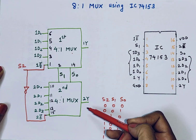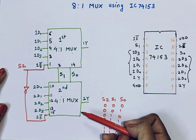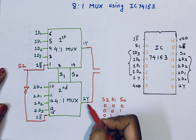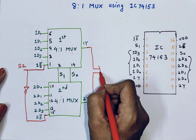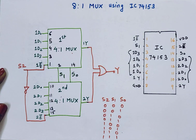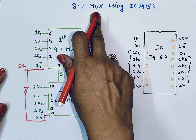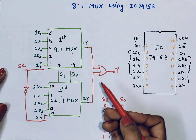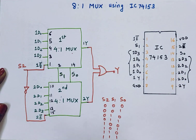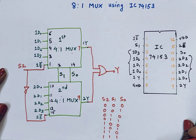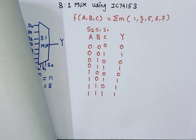At the output side, I want the output of both the first and second multiplexers combined. For addition, we use an OR gate, so I will connect an OR gate and this gives my main output. To implement an 8-to-1 multiplexer using IC 74153, you need one OR gate and one inverter. Output pin 1Y is pin 7 and 2Y is pin 9.